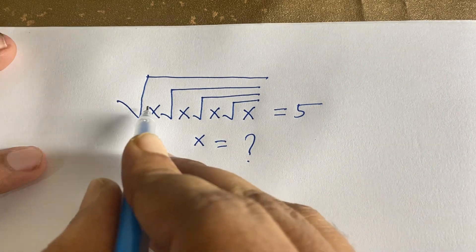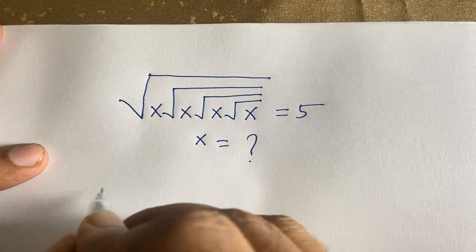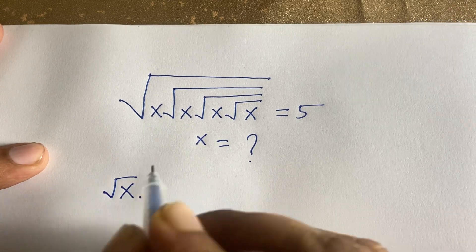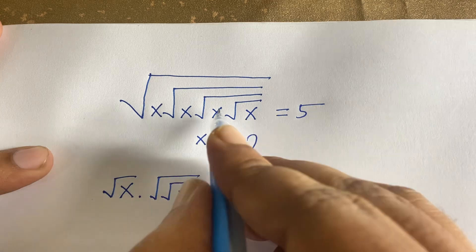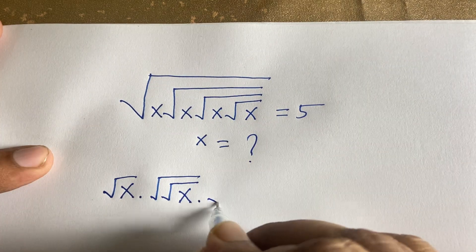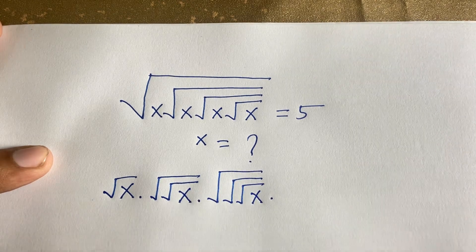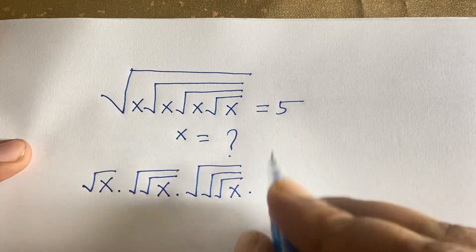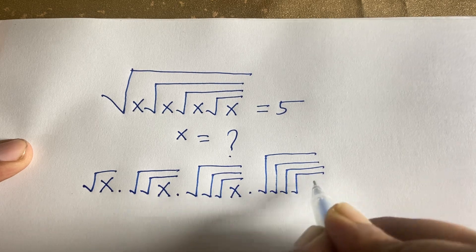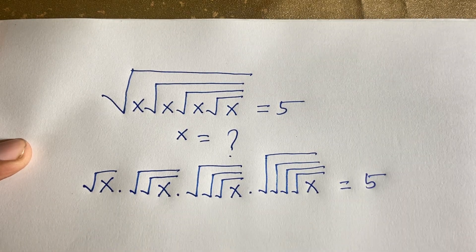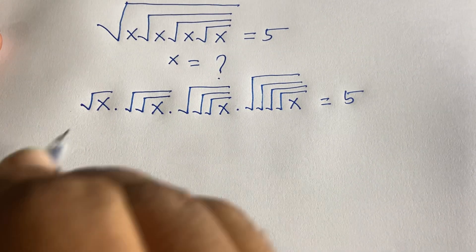First, I will solve this question using Method 1. I can write the expression as: square root of x, times square root of square root of x, times square root of square root of square root of x, times square root of square root of square root of square root of x — four nested square root terms — all equal to 5.